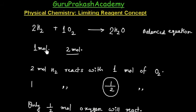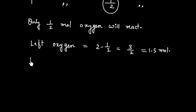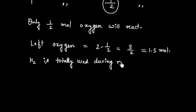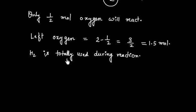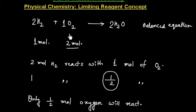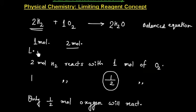The hydrogen that is used is 1 mole — it is totally used up. So hydrogen is totally reacted but oxygen is not totally reacted. Which substance — hydrogen or oxygen — is limiting the product? It is the hydrogen that is deciding the product because it is used up first. So in this case, hydrogen is the limiting reagent.